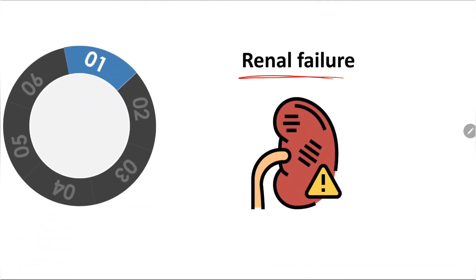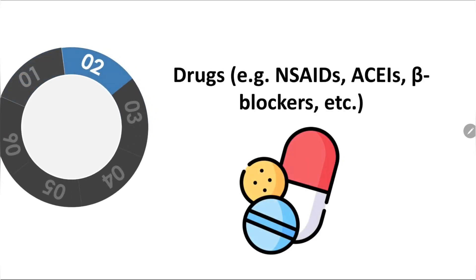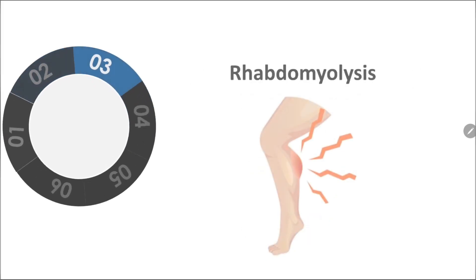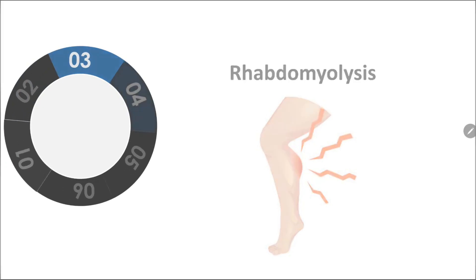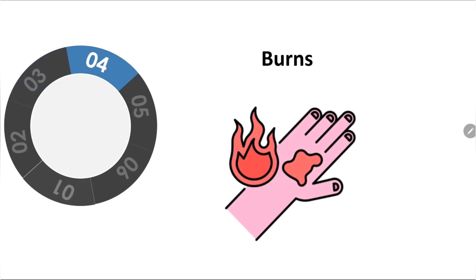...renal failure, because of decreased excretion of potassium. Drugs such as non-steroidal anti-inflammatory drugs, ACE inhibitors, beta blockers, digoxin, and suxamethonium are also important causes.